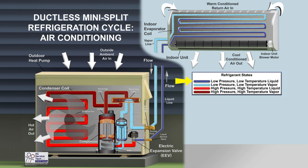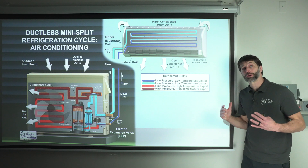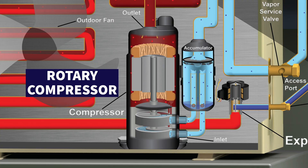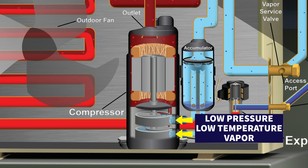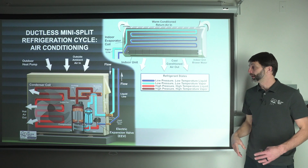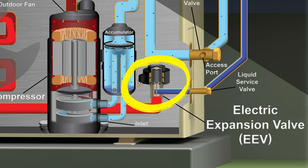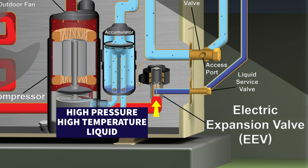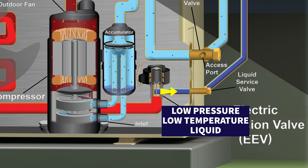Here are your refrigerant states. You have low pressure, low temperature liquid, indicated by the dark blue color, which you can see downstream of the EEV metering device. You have low pressure, low temperature vapor entering the compressor. On any refrigerant circuit you have a pressure-increase device — the rotary compressor — where low pressure, low temperature vapor enters and high pressure, high temperature vapor exits. The metering device has high pressure, high temperature liquid entering and low pressure, low temperature liquid exiting.